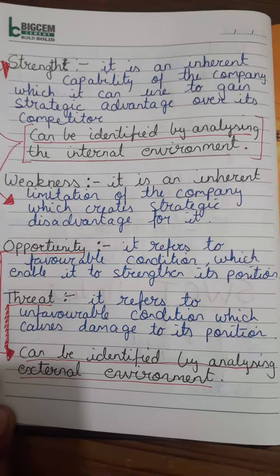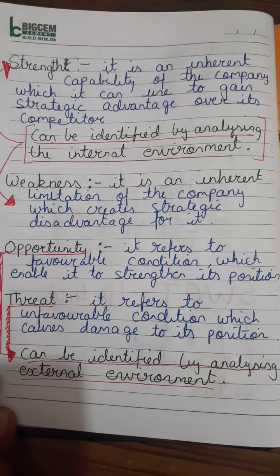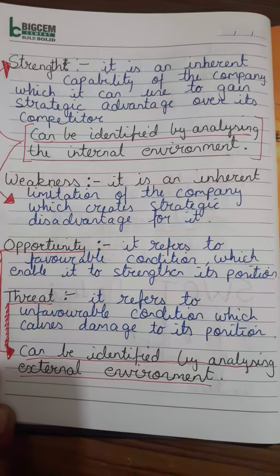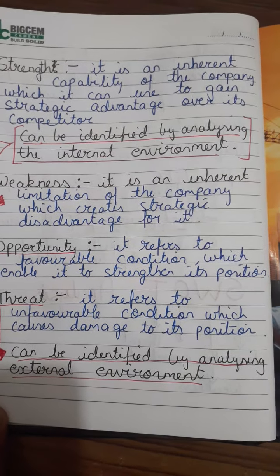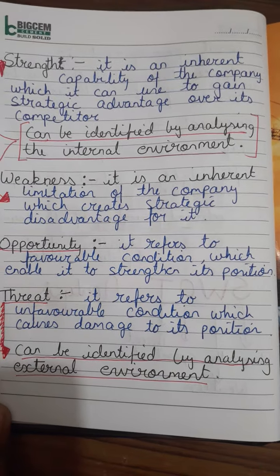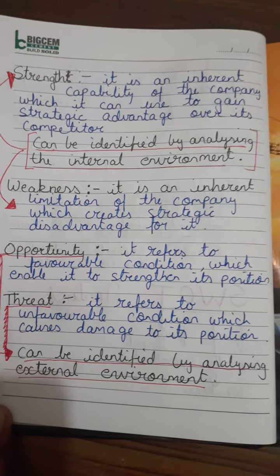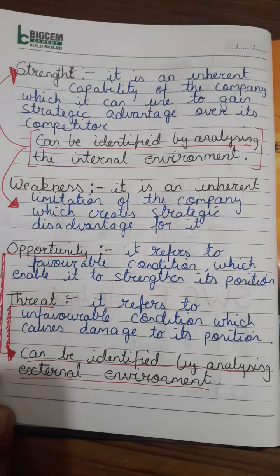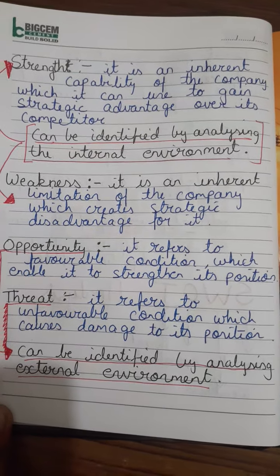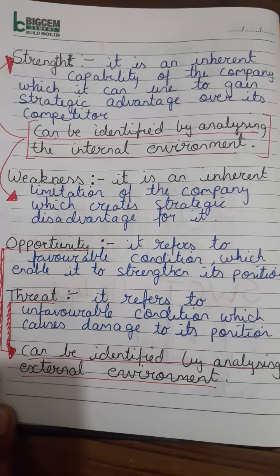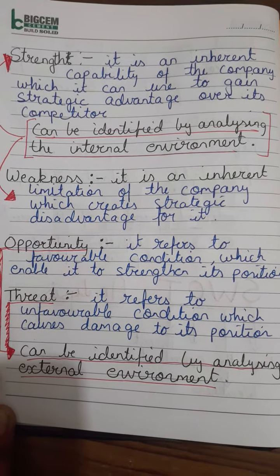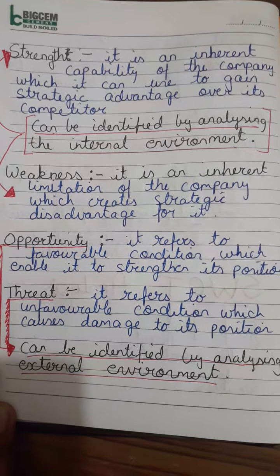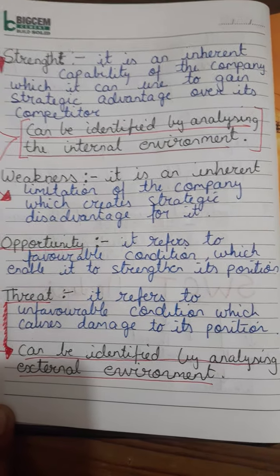Weakness is an inherent limitation of the company which creates a strategic disadvantage for it. Weakness of a company can be lack of expertise, shortage of funds, and improper business location. Opportunity refers to a favorable condition which enables the firm to strengthen its position — for example, weak competition or loosening of trade regulations.